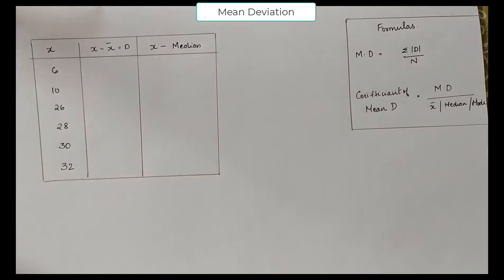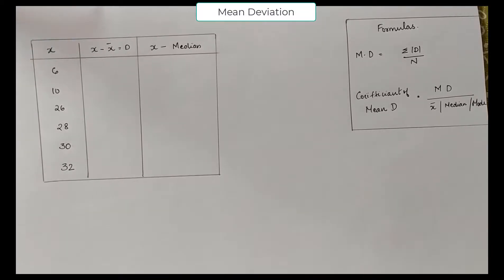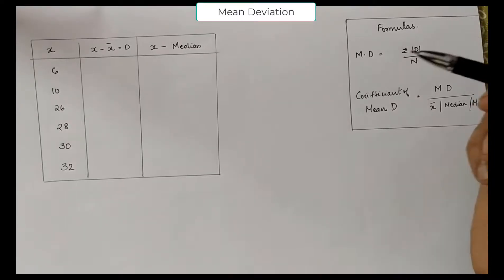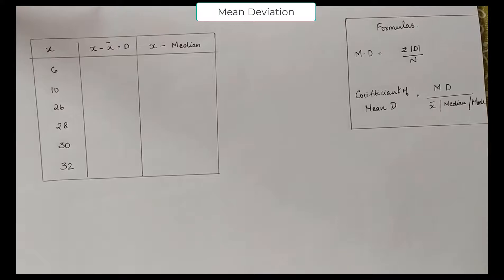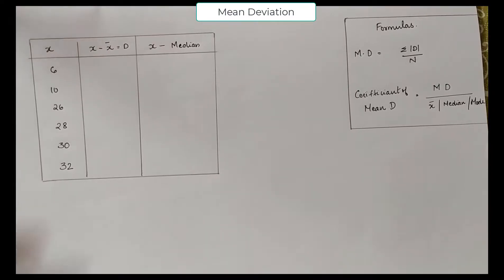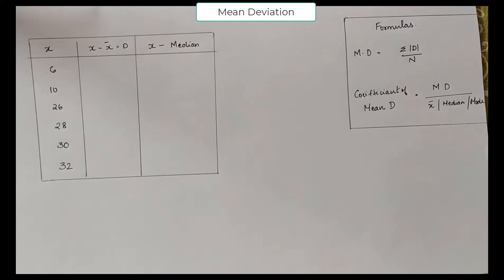Hello students, in today's session we'll be understanding how to calculate mean deviation. Mean deviation can be basically divided into two concepts: mean deviation for individual series and mean deviation for continuous series. Today I'll be discussing mean deviation for individual series. Mean deviation is the deviation that a data is having from a measure of central tendency — it could either be mean, median, or mode.